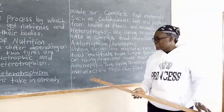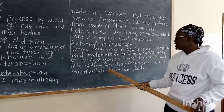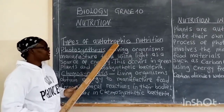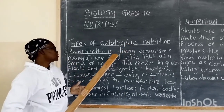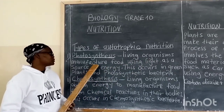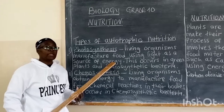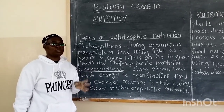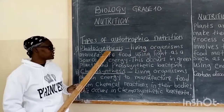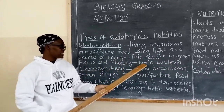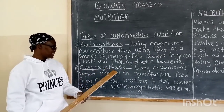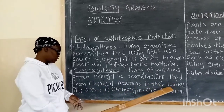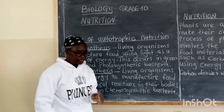What do we call living organisms that make their own food? We refer to them as autotrophs — living organisms which manufacture their own food. There are two types: first, photosynthesis, where living organisms manufacture food using light as a source of energy. This requires the presence of chlorophyll and uses simple raw materials such as water and carbon dioxide. Photosynthesis occurs in green plants and photosynthetic bacteria. Second is chemosynthesis, where living organisms obtain energy to manufacture food from chemical reactions in their bodies. This occurs in chemosynthetic bacteria.